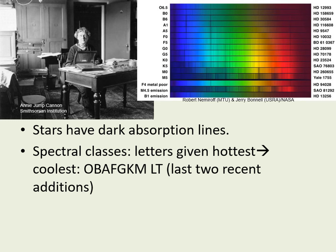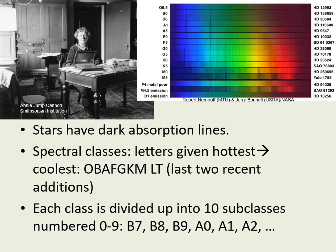Our sun is spectral class G. We also divide each of these spectral classes into 10 subclasses, with numbers ranging from 0 to 9. So the hottest A stars are A0, then A1, A2, etc. to A9. The next cooler ones are F0, and so on. Our sun is class G2.